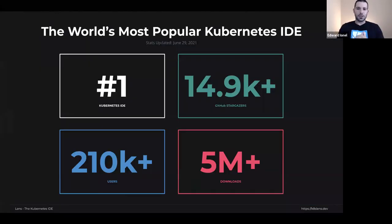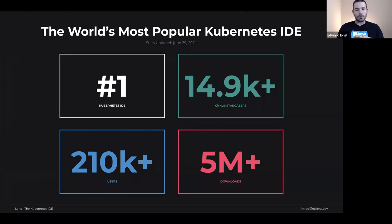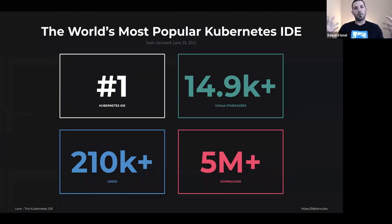We have come a long way since we open-sourced the project back in March of 2020. We currently have roughly 15,000 GitHub stargazers and over 200,000 users. You can see that we have 5 million downloads, and this is something we want to really thank our community for. The growth has been completely organic, and we want to thank our community for helping us shape our roadmap, sharing Lens the IDE, and leveraging our technology for their Kubernetes initiatives. We are looking forward to building more features and open-source technologies in the future.